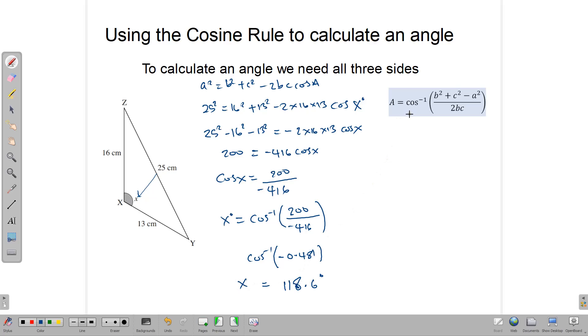If you wanted to use it in this version, then we would have that X is equal to the cos inverse of b squared, which is 16 squared, plus 13 squared minus a squared, which is 25 squared, all over 2 times 16 times 13.